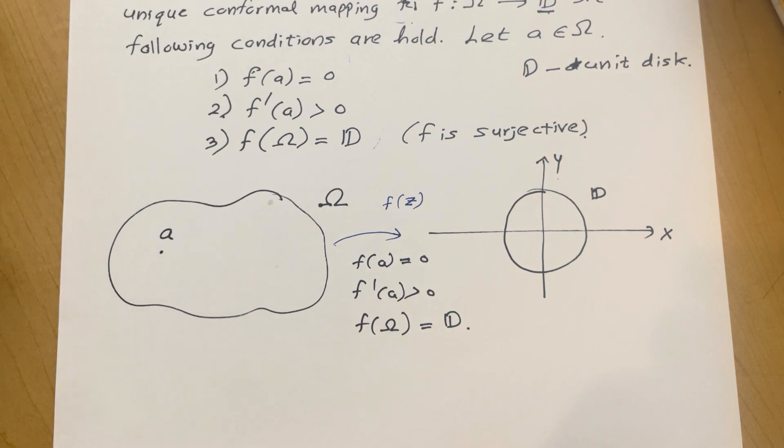But proving the existence of the Riemann mapping theorem is the hardest part of this proof. I'm not going to prove that in this video. In my future videos I'm planning to go through the proof of the Riemann mapping theorem, but uniqueness can be easily proved by using the Schwarz Lemma.